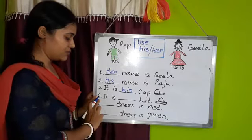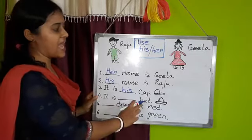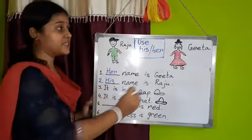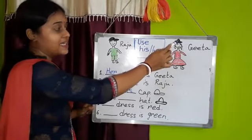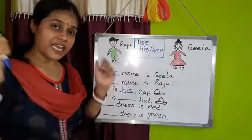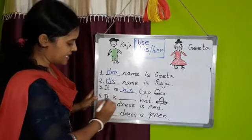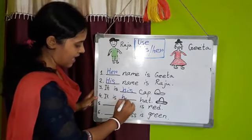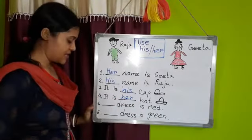Number four. It is her hat. Who is wearing a hat? Yes, Geeta. Geeta is a girl and she is wearing a hat, so we write her here. It is her hat.